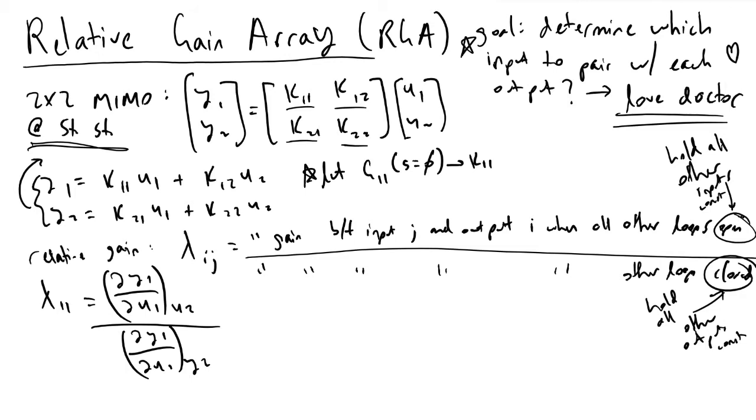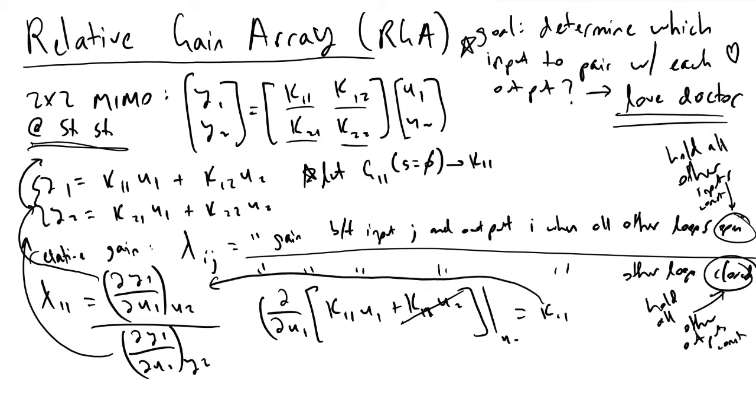Then we divide it by partial derivative of output 1 with respect to input 1 holding all other outputs constant, which in this case would be just y2. To do that, we will turn to these equations that we've written up here. When we take the partial of y1 with respect to u1, holding u2 constant of the equation k11 u1 plus k12 u2, because u2 is a constant, this term is equal to zero. When we hold u2 constant this is just equal to k11. So that's pretty nice and now you know the numerator of lambda 11.